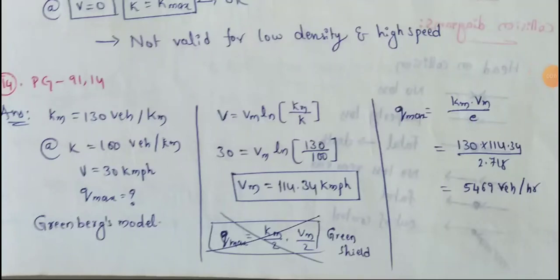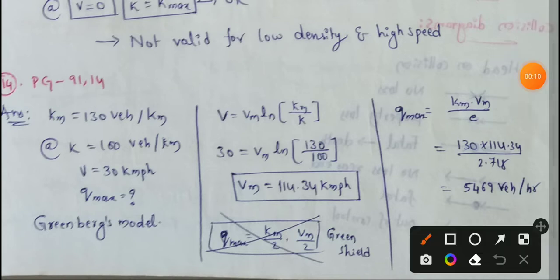Next topic: Greenberg's Logarithmic Model. In this video, we will discuss a solid example of this problem. We have some given data. The jam density on the freeway is 130 vehicles per km, so maximum density is 130 vehicles per km.